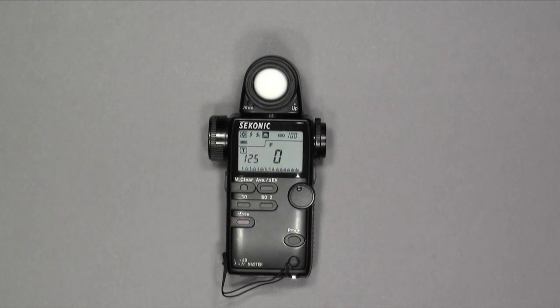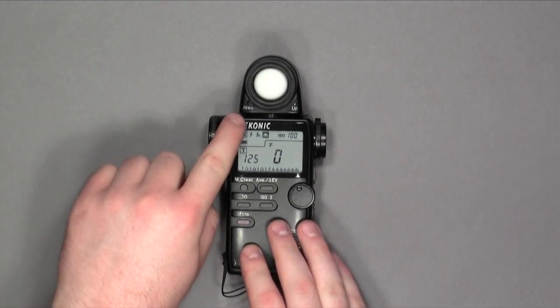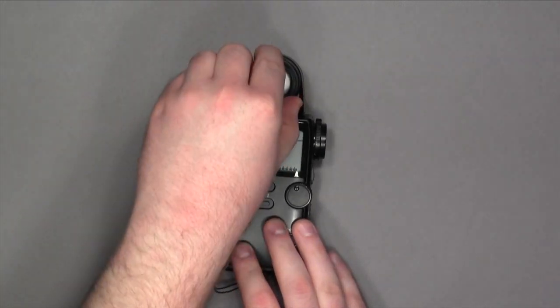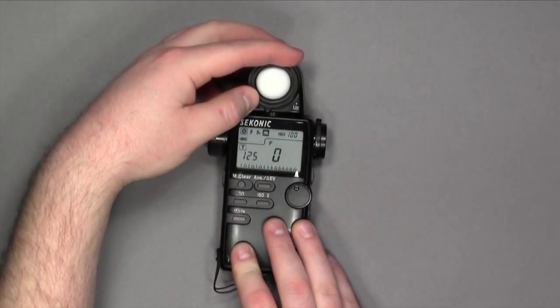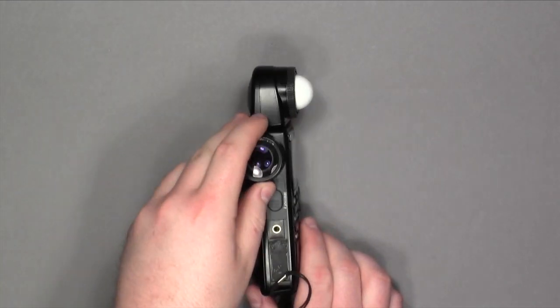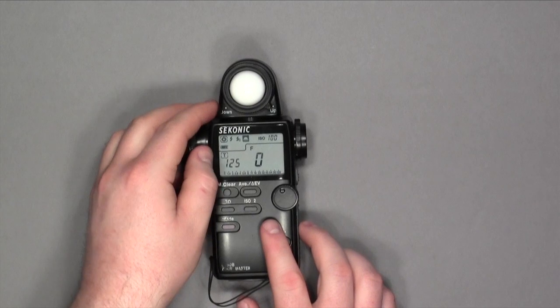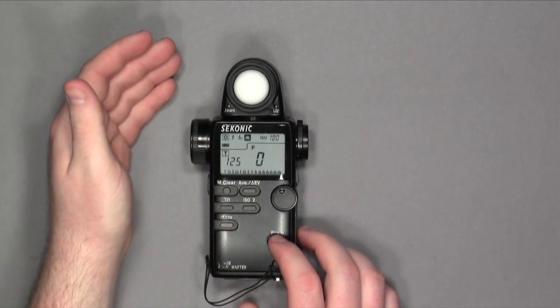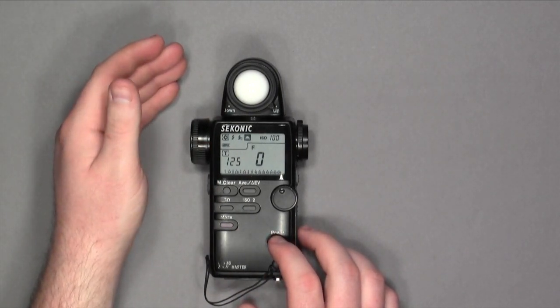Next, what you'll do is change the Lumisphere from down to up by turning this dial to the right. This brings the bulb up and out of its protective case. The purpose for that is simply to keep it protected during travel or storage.